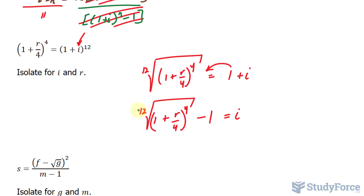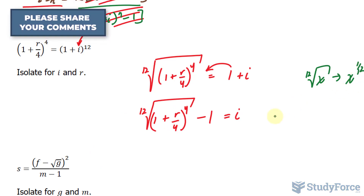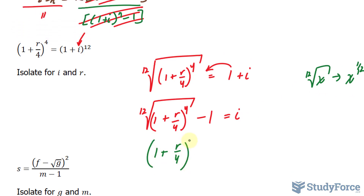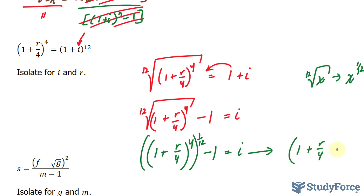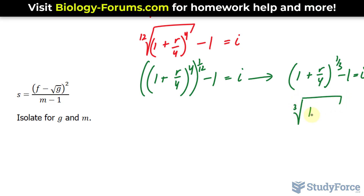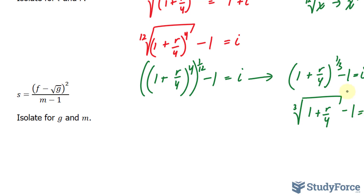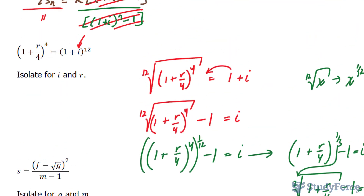One thing that's interesting about roots is that the 12th root actually means a fractional exponent. So technically, if I had the 12th root of x, that's the same thing as x to the power of 1 over 12. If I change this back into fractional exponents, I'll end up with 1 plus r over 4 raised to the power of 4, and that being raised to the power of 1 over 12. With the exponent rules, if you have a power raised to a power, you multiply the powers together. 4 times 1 over 12 is 1 over 3. So this is like saying 1 plus r over 4 raised to the power of 1 over 3, minus 1, is equal to i. And 1 over 3 is the same as the third root of 1 plus r over 4, minus 1, equals i.